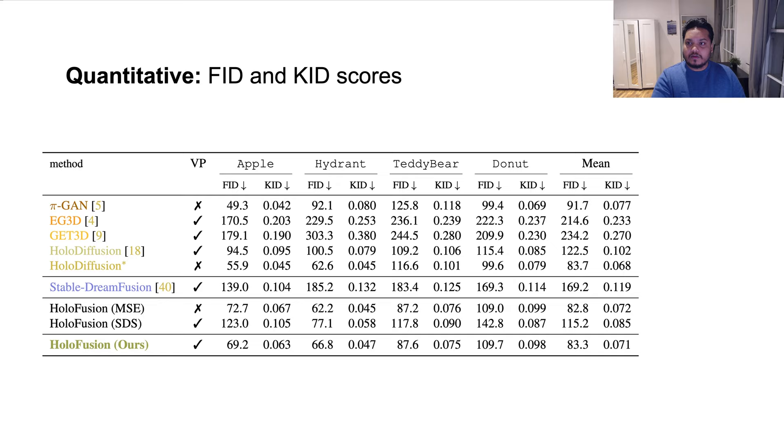These are the FID and KID scores to demonstrate the generative quality of our results. Our full method, last row, surpasses all the baselines in terms of the scores. Although PyGAN gets better scores than ours on apples and donuts, its 3D agnostic training procedure doesn't produce 3D consistent samples.